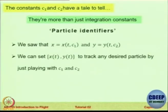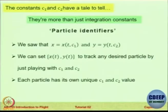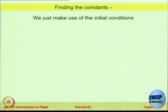We can track different particles by playing with these two coefficients as I will show in the utility. Each particle in the fluid flow corresponds to a particular C1 and C2 value. You can find these constants by using the initial conditions. The initial condition is that at t equal to 0, particles A, B, and C had some x0 and y0 values. We want to track a particle at some point x0, y0 — so at t equal to 0, substitute to get C1 and C2.